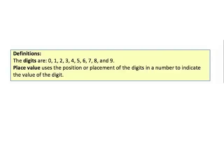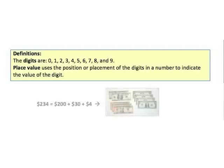Place value uses the position or placement of the digits in a number to indicate the value of the digit. For example, if we're taking a look at $234, the 2 represents 200, the 3 represents 30, and the 4 represents $4. It's not just a case of 2 plus 3 plus 4 — it's a case of 200 plus 30 plus 4.